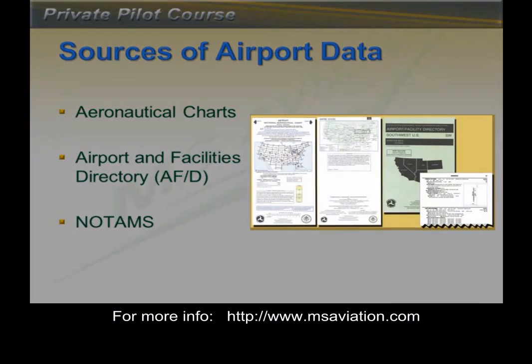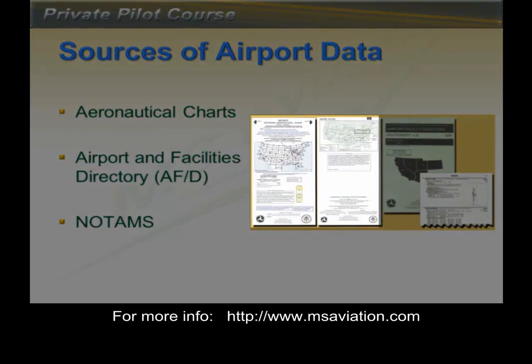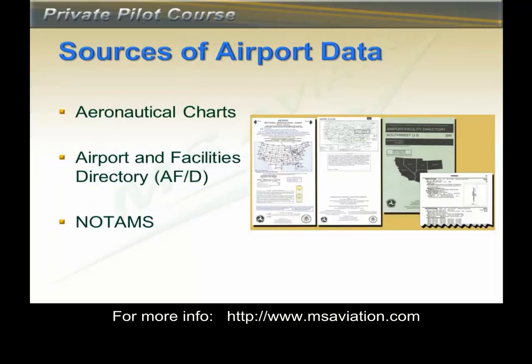There are several places you can get information about the airport you are at or one you want to go to. Aeronautical charts, which will be covered in more detail in a later lesson, is the first place most people look. The aeronautical chart shows the physical location of the airport and surrounding towns, roads, and so on. Additionally, there is information about available radio frequencies, the airport's elevation, and other information.